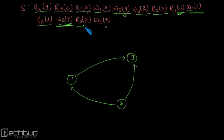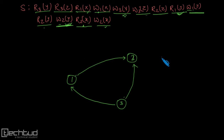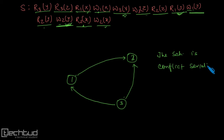Now r2x. r2x can conflict with something, but this is from the same transaction — so no conflict. This is my final precedence graph. Now this schedule is conflict serializable.